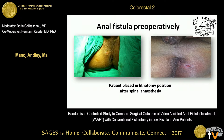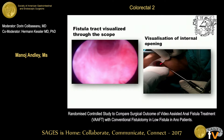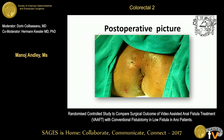External openings at 11 o'clock and 2 o'clock sides, with the patient placed in lithotomy position after a subarachnoid block. The fistuloscope was introduced and negotiated through the external opening with glycine solution running. The fistula tract was nicely visualized through the scope, and the internal opening was identified by the light shining through or by glycine irrigation fluid coming out. Finally, the entire tract was fulgurated with electrocautery. Post-operatively, the external opening appears as is, with no large open wounds.